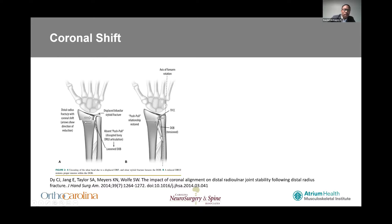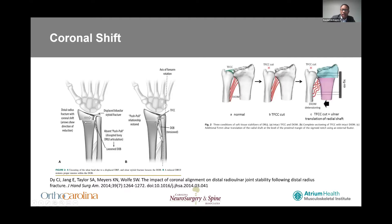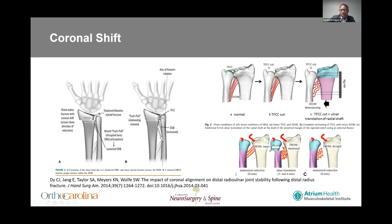If you have a TFCC tear and coronal shift, that distal oblique band gets slack and that causes DRUJ instability. But if you get that reduced, it will tension the distal oblique band and in theory cause a stable DRUJ. You can also have the opposite happen: an ulnar shaft fracture that translates in the coronal plane can also cause slack in that distal oblique band with an associated TFCC tear, also causing DRUJ instability.